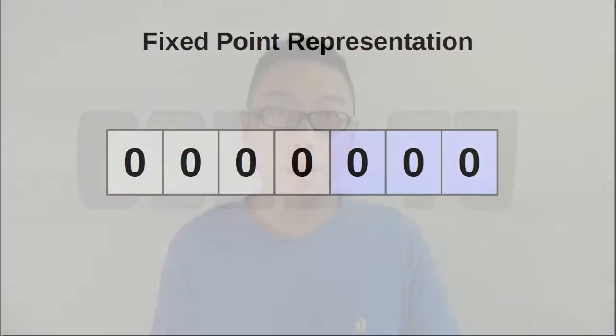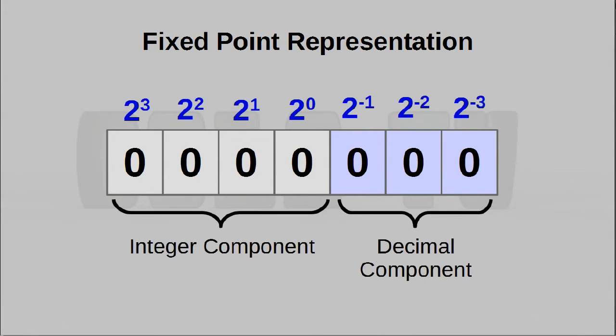To represent decimal values, there are two different techniques, the simpler of which is called a fixed-point representation, where instead of giving every digit a positive power of 2, some of them also get negative powers, and in other words, they stand for half and a quarter and an eighth and so on.